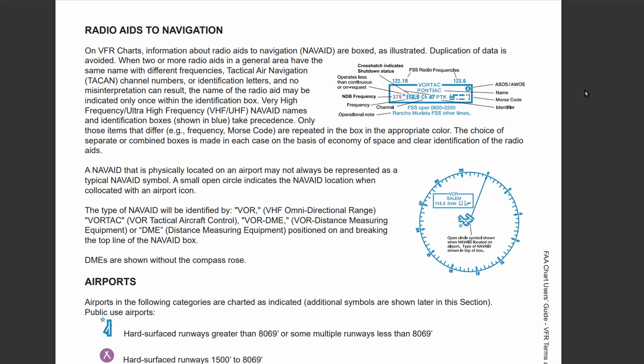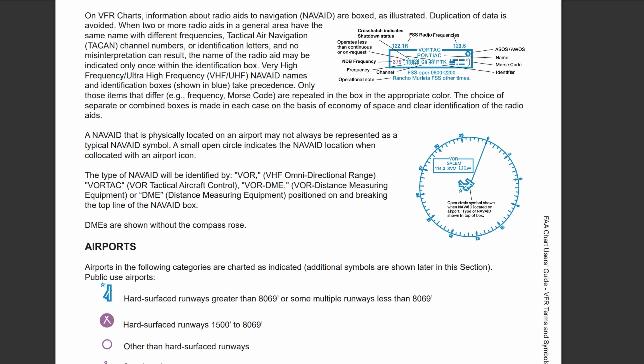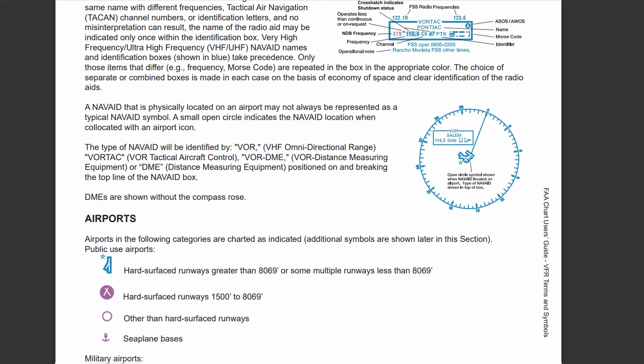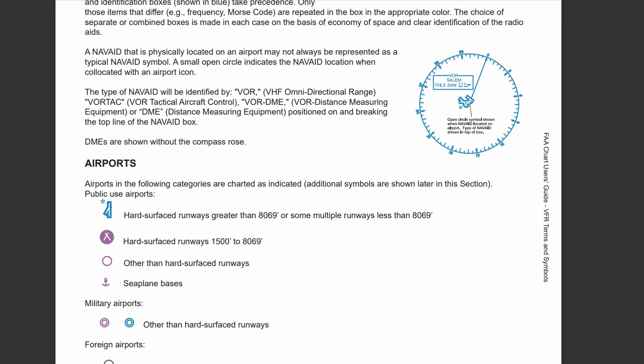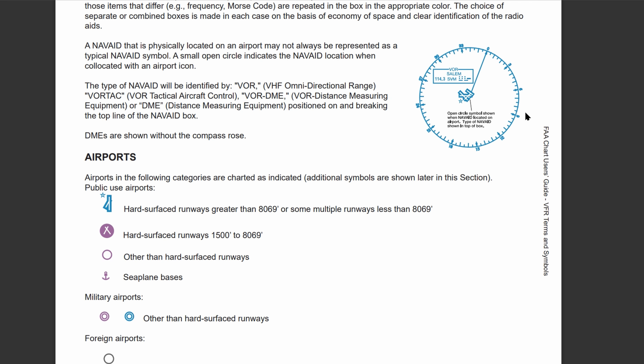They are boxed and show relevant information inside of them. You can take a look at the example to the right. We can see if our radio aid to navigation is located at an airport if there is a little circle. Look to the right as I scroll down right here.